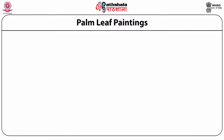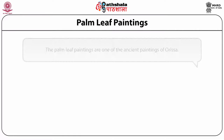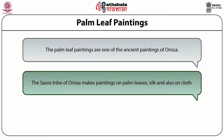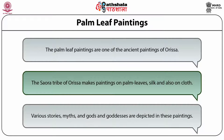Palm leaf paintings are one of the ancient paintings of Odisha. The Saora tribe of Odisha makes paintings on palm leaves, silk and also on cloths. Various stories, myths and gods and goddesses are depicted in these paintings.